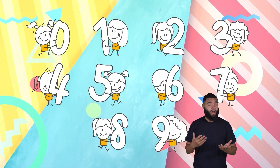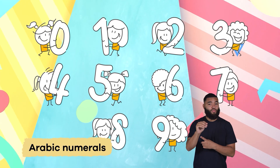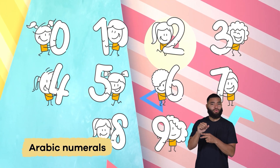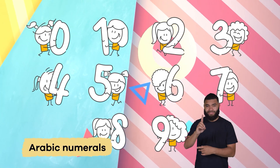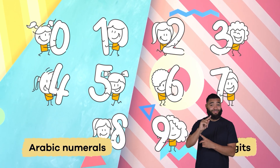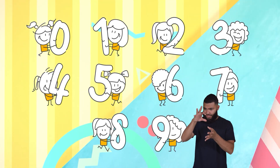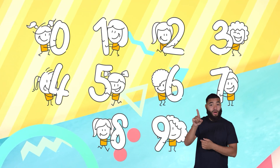They are called Arabic numerals, and these numerals are made up of something called digits. Let's use these digits to count to nine together.